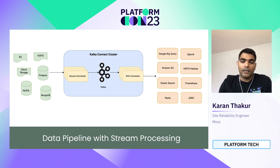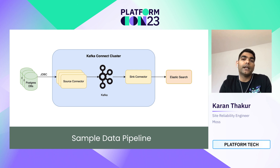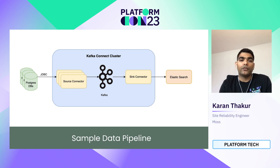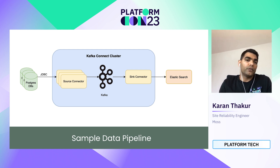Let's look at a sample data pipeline. Here we take the example of the most common scenario where data is coming from multiple databases and we need to collect and store it in Elasticsearch for further analysis. In the Kafka Connect cluster, there will be source connectors and sink connectors — one source connector per database. Since our destination is Elasticsearch, we'll be using the Elasticsearch sink connector. As the source database, we are using Postgres, and you may have one or multiple databases depending on your setup. Let's go through each component one by one to see how the processing works internally.